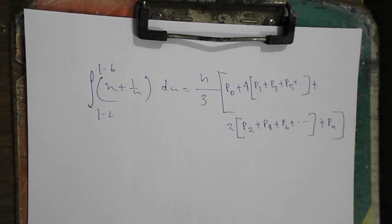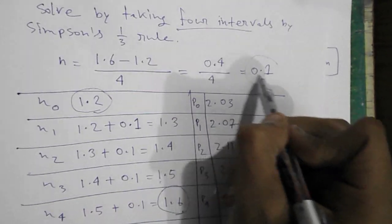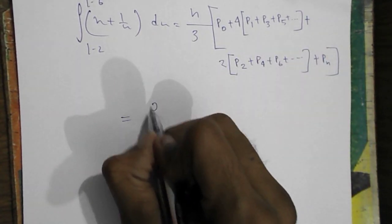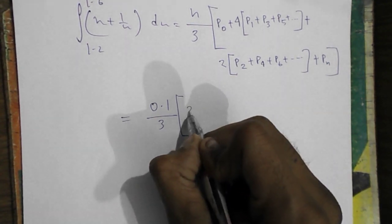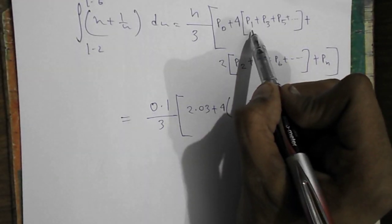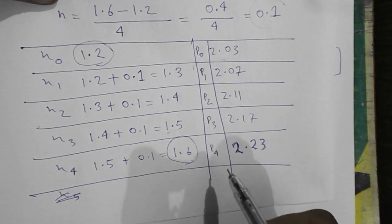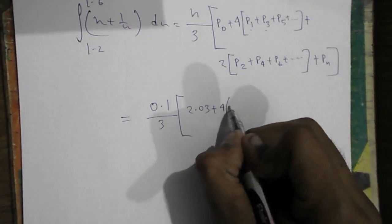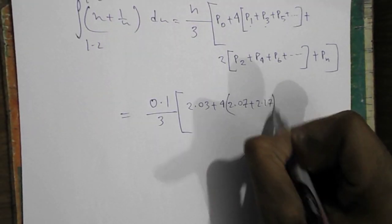This is the actually formula. Now we will replace the formula with our actual value. Our h is 0.1. In the place of h we will write 0.1 by 3. Our p0 is 2.03.